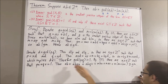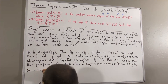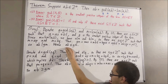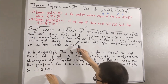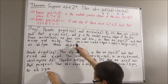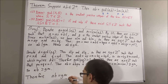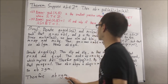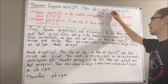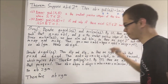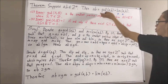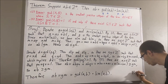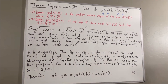We now have that AB is less than or equal to GM, and AB is greater than or equal to GM. These two inequalities imply that AB must be equal to GM. And G times M is precisely the greatest common divisor of A and B times the least common multiple of A and B. So we have proven precisely what we wanted to prove. This completes the proof.